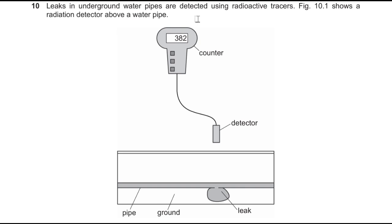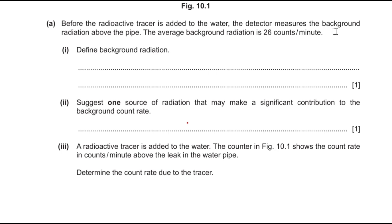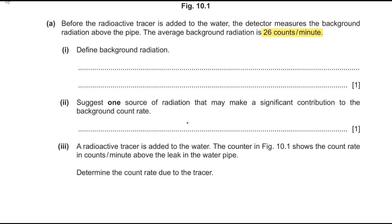Question 10 says leakages in underground water pipes are detected using a radioactive tracer. Figure 10.1 shows a radiation detector above a water pipe. Before the tracer is added, the detector may detect background radiation above the pipe — the average background count is 26 counts per minute. Background radiations are radiations present in our environment. Sources include food, rocks, or cosmic radiation.